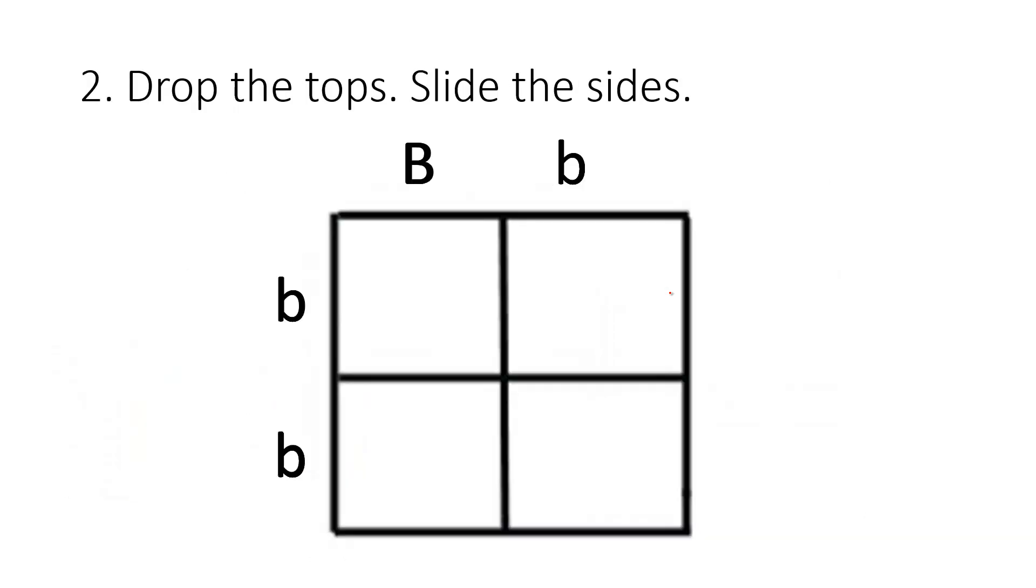Now it's time to move to step two. Step two is to drop the tops and slide the sides. What I mean is that you drop these top letters down. Take that big B and drop it all the way down. Drop it one more into the box. Take the small one, drop it down, and then you slide the sides. You're always going to slide to the right. I'm sliding these all to the right so that all the boxes are completely filled out with two letters.